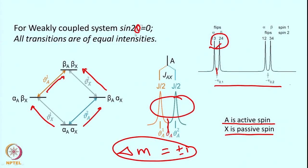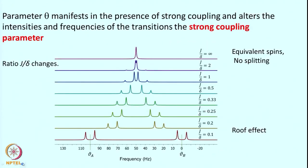Coming back to the intensity parameter: the theta parameter manifests the presence of strong coupling and alters the intensity and frequency of transitions. When sin2θ = 0 (weak coupling system), all four transitions are of equal intensity. When theta is non-zero (strong coupling), the intensities and frequencies of the transitions change accordingly.